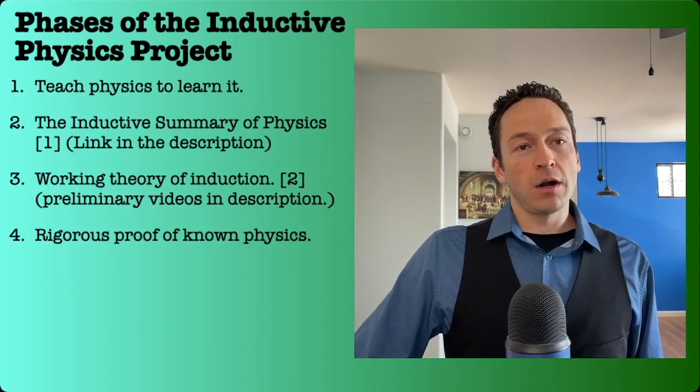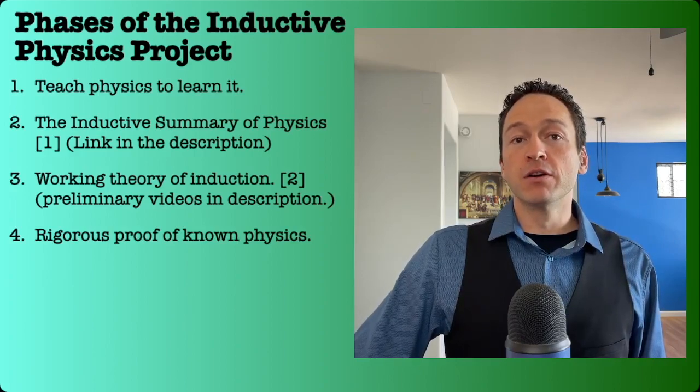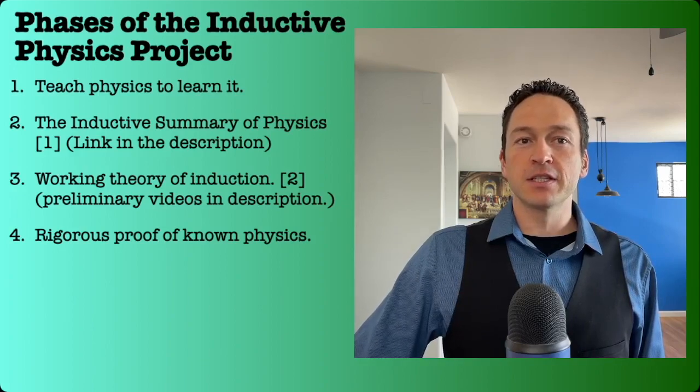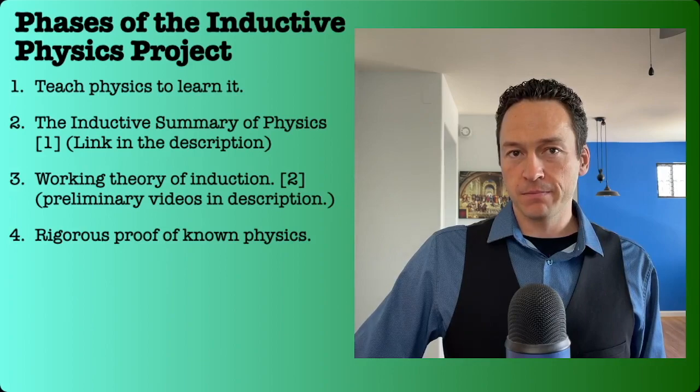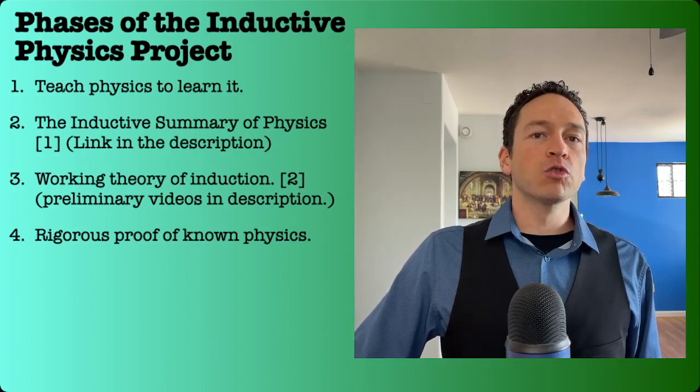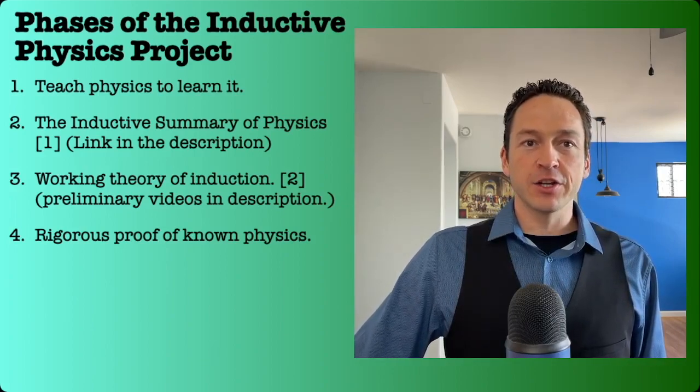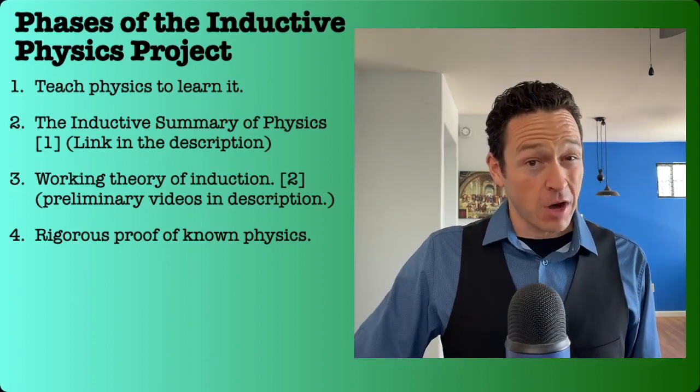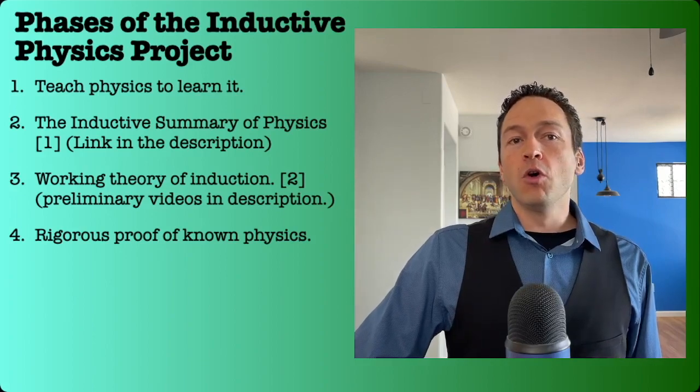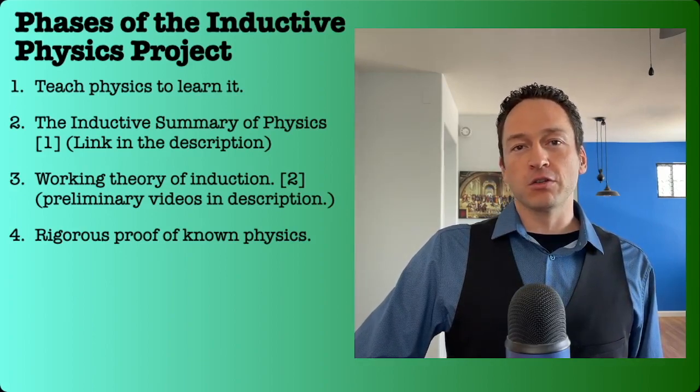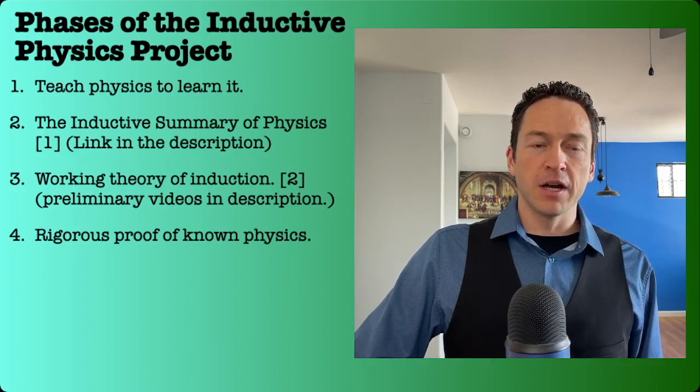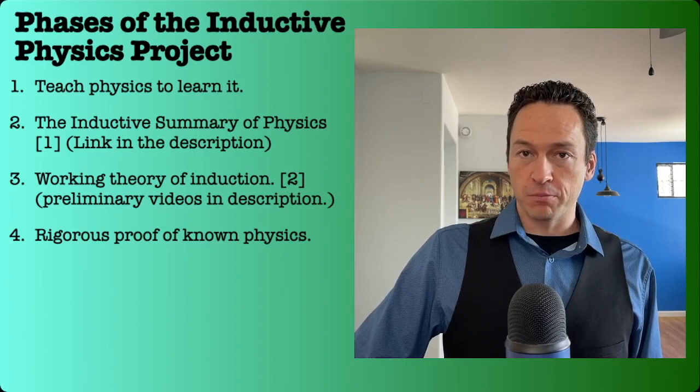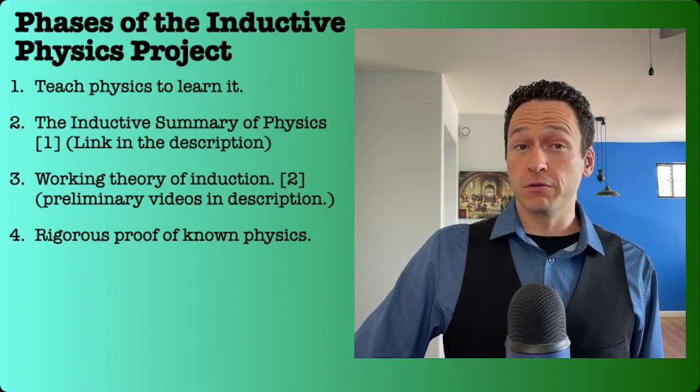Phase 4. Use that theory to give a rigorous proof of all of the basics of physics leading up to the discovery of quantum and relativistic phenomena. Because the true scientific method relies on troves of prior knowledge with which it is to make inferences about observations, it will only be able to make good inferences about the nature of quantum and relativistic phenomena if we first do a rigorous proof of all of the prior principles which were required to observe those phenomena.